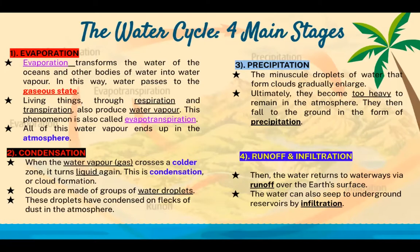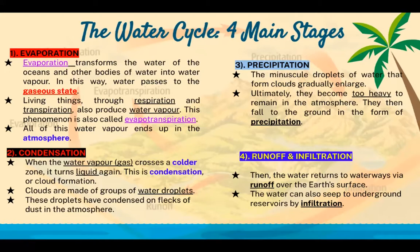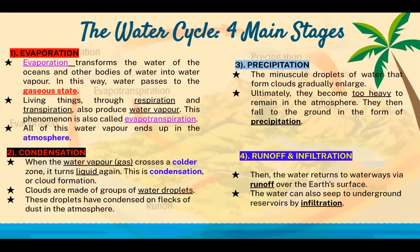Two: condensation. When the water vapor, which is a gas, crosses a colder zone, it turns to liquid again — this is condensation or cloud formation. Remember when you're boiling water on the stove: you heat the liquid and it turns into steam. But if you put a cover on your pot, the cover is cooler than what's inside. The gas particles turn back into liquid and you see condensation — water droplets appear on the cover of your pot.